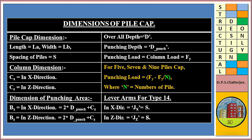Overall depth equals D; punching depth equals D-punch. Punching load equals column load equals Fy. For pile caps with 5, 7, and 9 piles, punching load equals Fy minus Fy divided by N, where N equals number of piles. Lever arm for Type 14 (nine pile): in X direction Jx equals S, and in Z direction Jz equals S.